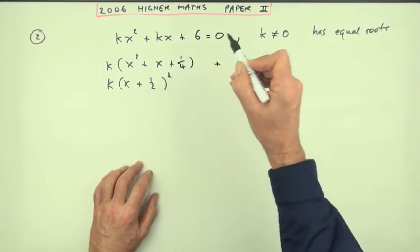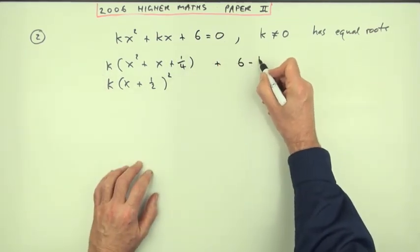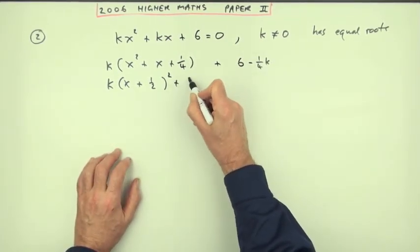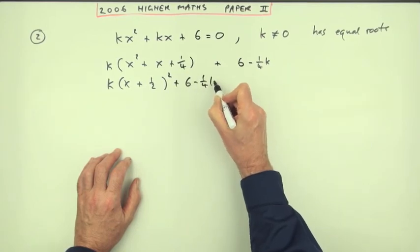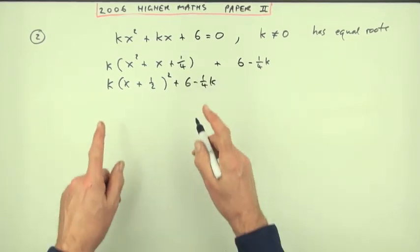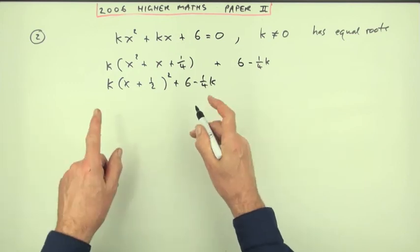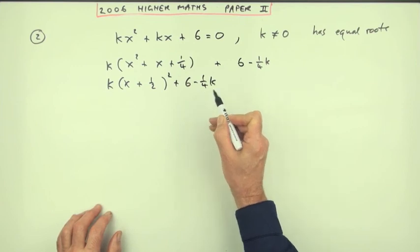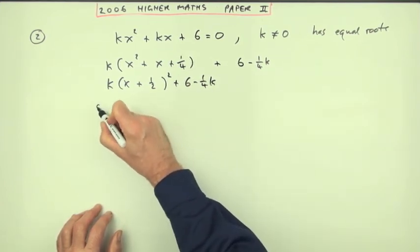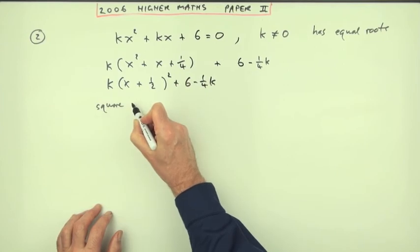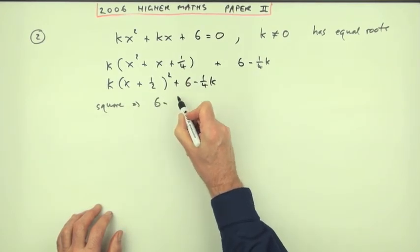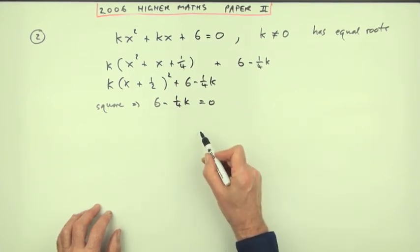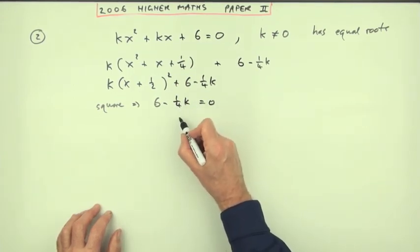So that means you'd have to subtract a quarter of k, so minus a quarter k would produce this. Well, just the same expression. I'm going to put here 6 minus a quarter of k. Oh dear, both those lines should say equal to zero since they're both meant to be equations equal to zero. Then if that's to produce equal roots, I only want the squared part of it. So if that's going to be a square, that means that 6 minus a quarter k has to equal zero.